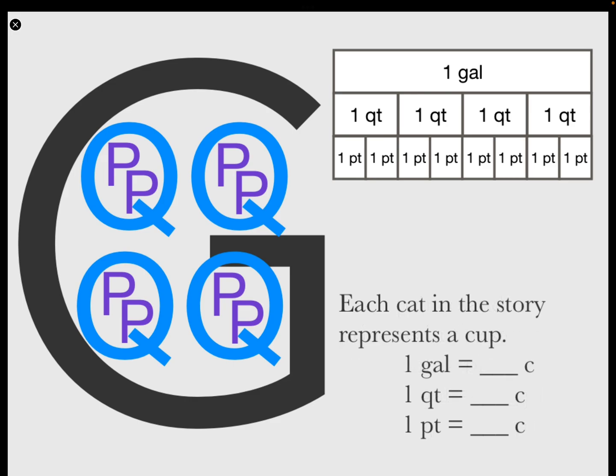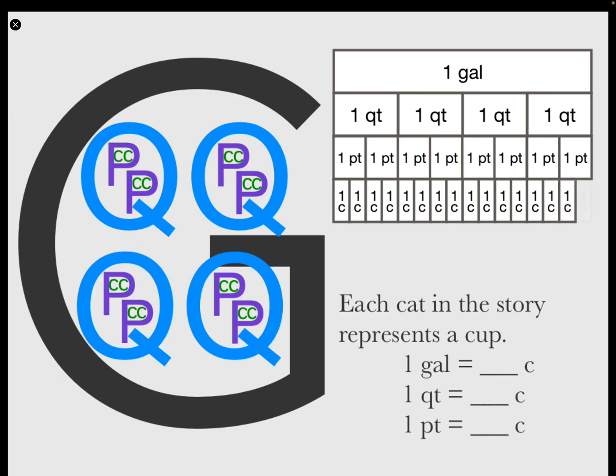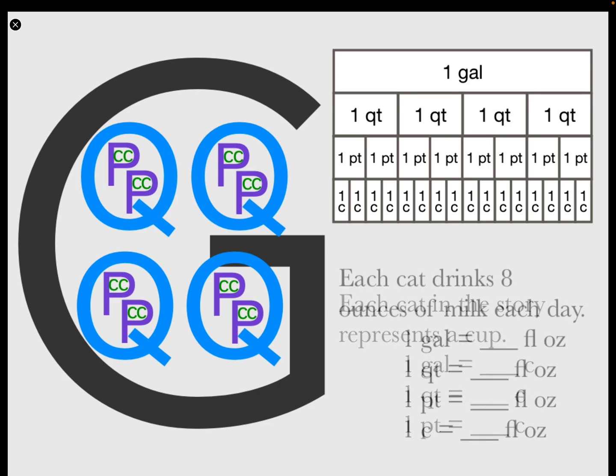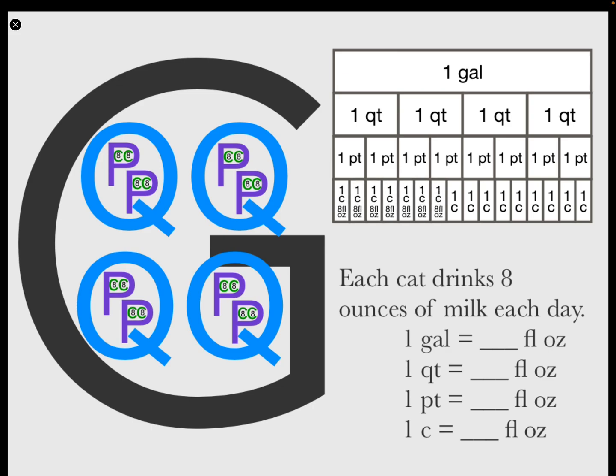Each cat in the story represents a cup. So two cups equal a pint. Four cups equal a quart, and you can go all the way to a gallon. Now each cat drinks eight ounces of milk each day. So one cup is equal to eight fluid ounces.